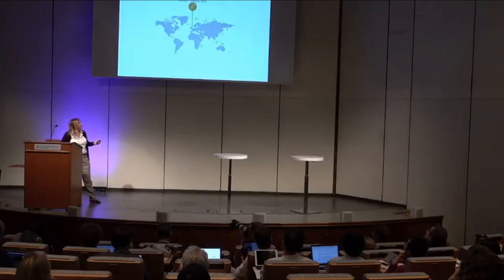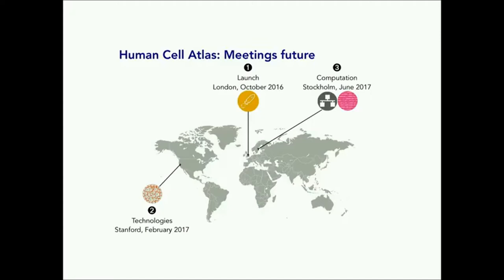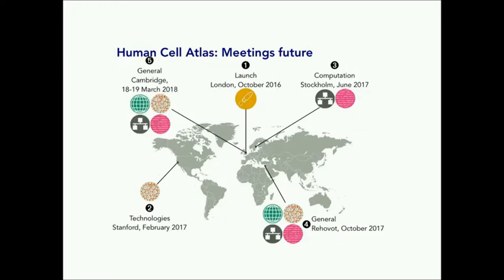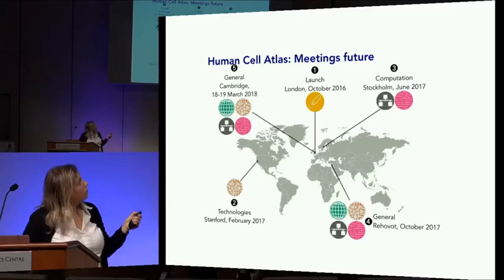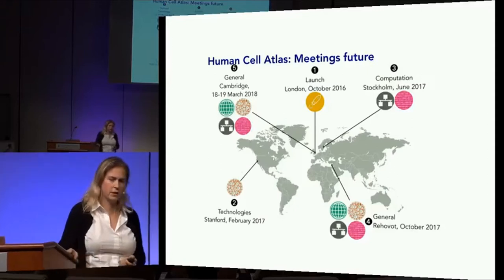I'll finish with a few words about the growth of the HCA community. We kicked off with a meeting in London last October, launching with a cross-section of different communities. Then we had a more focused technologies meeting in Stanford in February. Now we're here at the computational meeting in Stockholm. Looking forward, there's another meeting at the Weizmann in Israel in mid-October, and then next March 8th and 9th back in the UK. Hundreds of people have now joined the Human Cell Atlas community, and this growth and excitement is tremendously gratifying to Aviv, myself, and all of us involved.